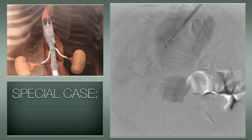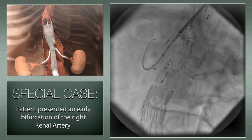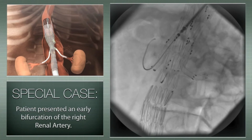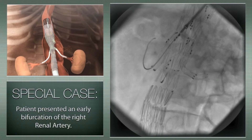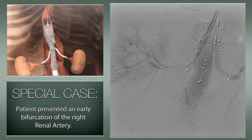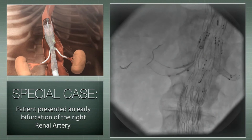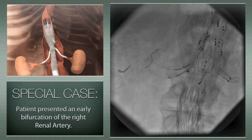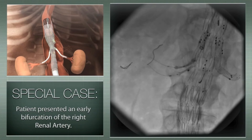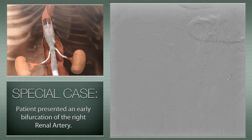Especially in this case, the patient presented an early bifurcation of the right renal artery, and at first sight one would think of excluding one of the renal arteries, but this would cause at least 50% loss of the right kidney. We then decided to try a double catheterization in a kissing stent technique, deploying two balloon-expandable covered stents inside the first self-expandable covered stent to save the whole kidney.